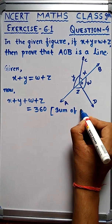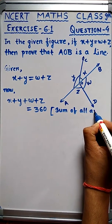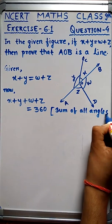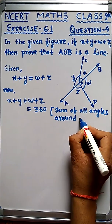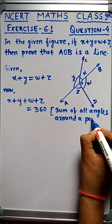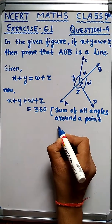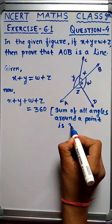This is because the sum of all angles around a point is 360 degrees.